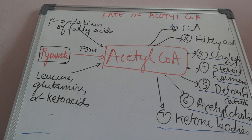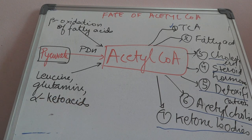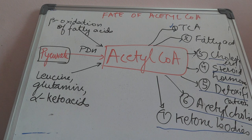The most important thing to remember is that vitamin B5, or pantothenic acid, forms coenzyme A, which helps in the formation of acetyl-CoA. The deficiency of vitamin B5 causes burning foot syndrome. Acetyl-CoA enters almost seven pathways: the tricarboxylic acid cycle, fatty acid synthesis, cholesterol synthesis, steroid hormone synthesis, detoxification reactions, acetylcholine formation, and ketone body synthesis. Thank you.